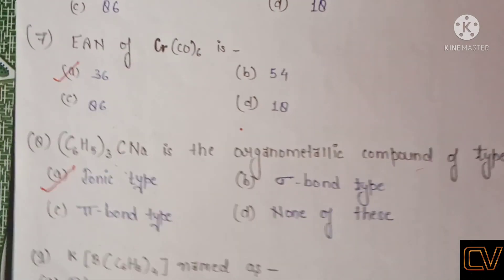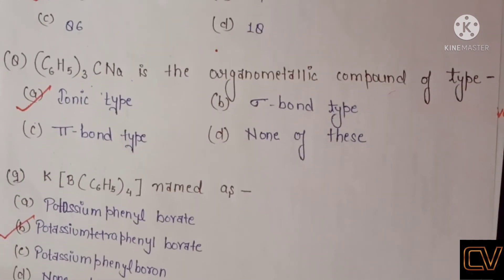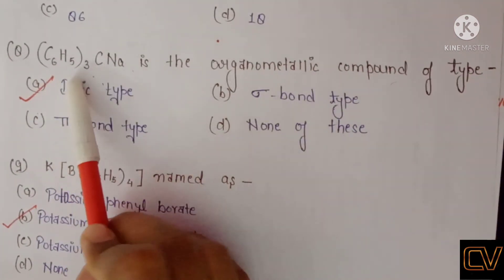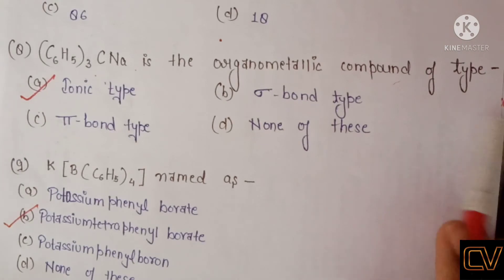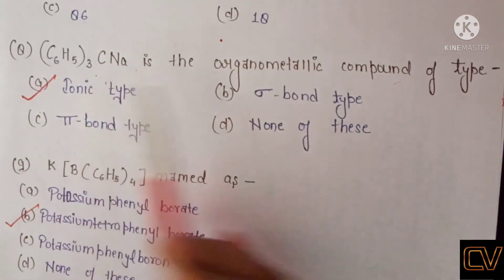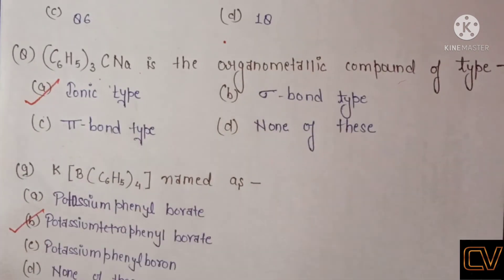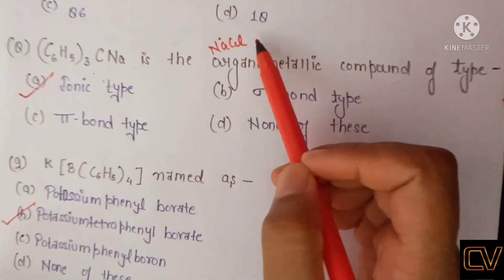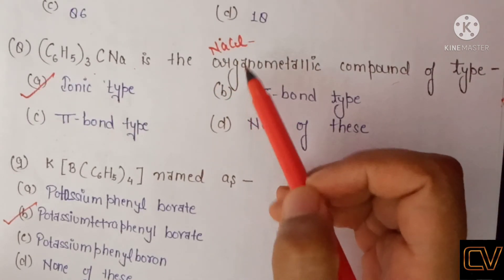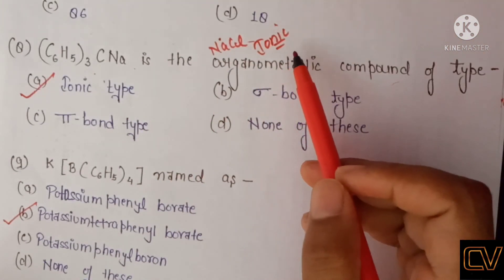Question number 8: C6H5 three times, with sodium attached to carbon — it asks what type of organometallic compound this is. Remember that sodium always forms ionic bonds. Just like in NaCl, the bond between Na and Cl is an ionic bond. So sodium always forms ionic bond type organometallic compounds.